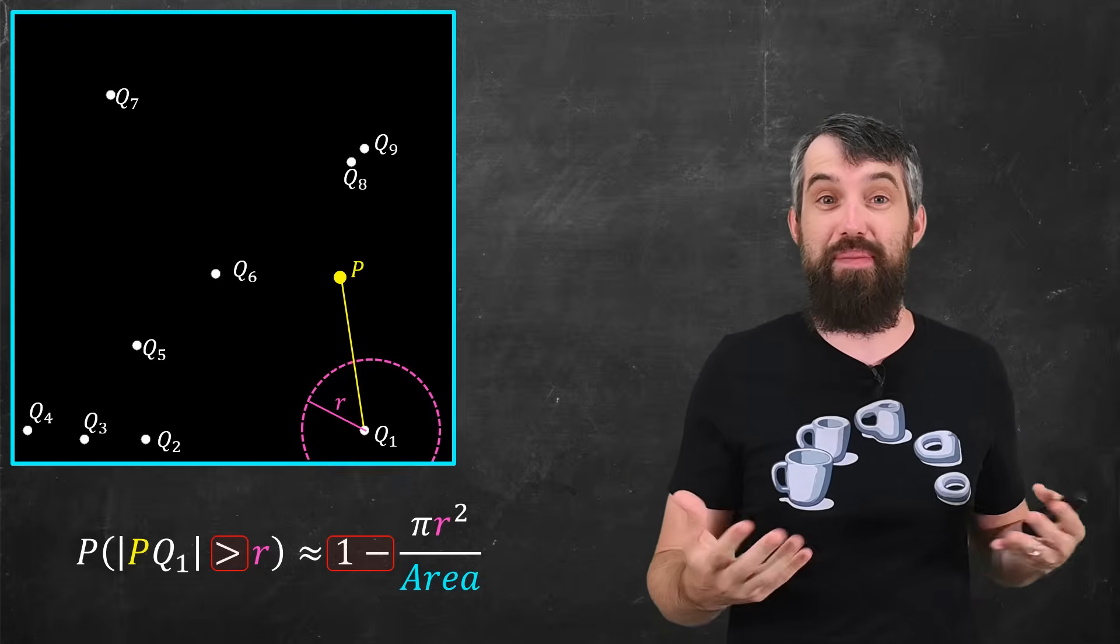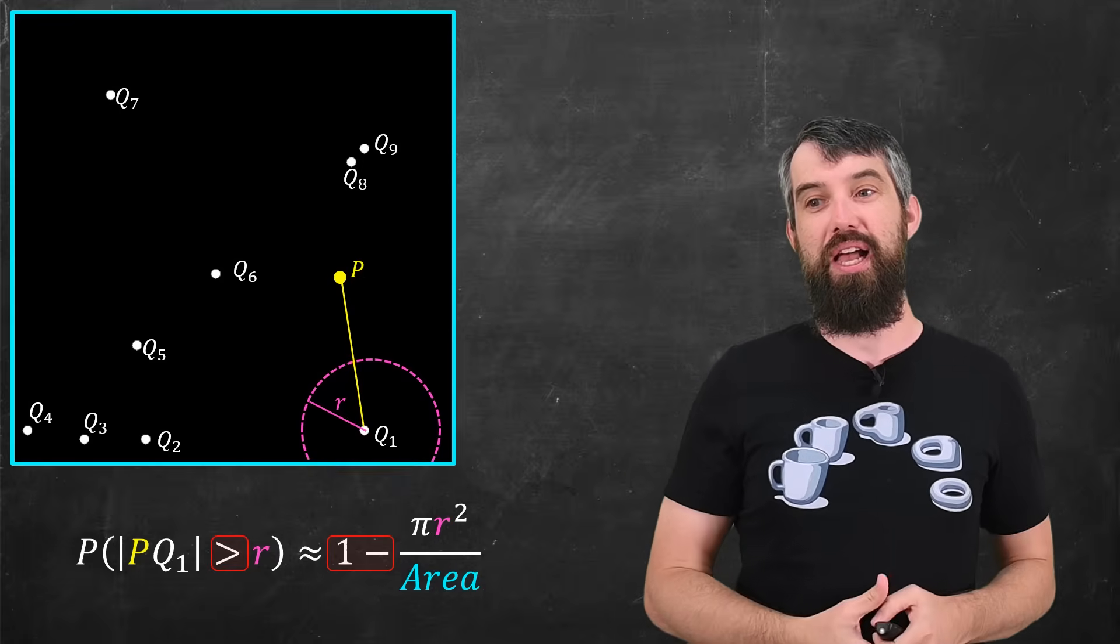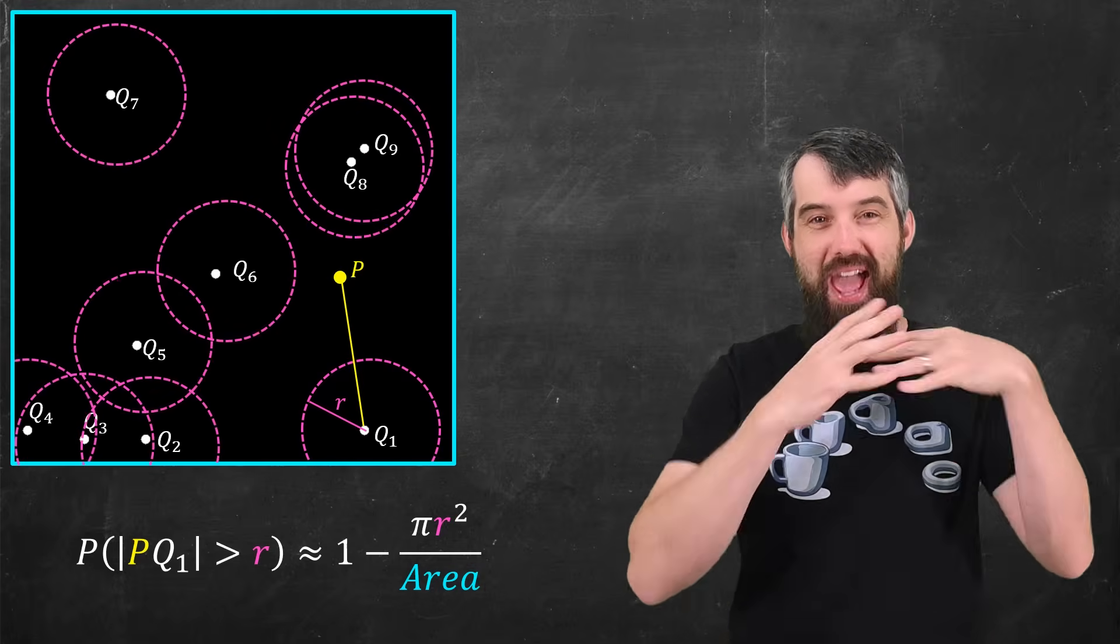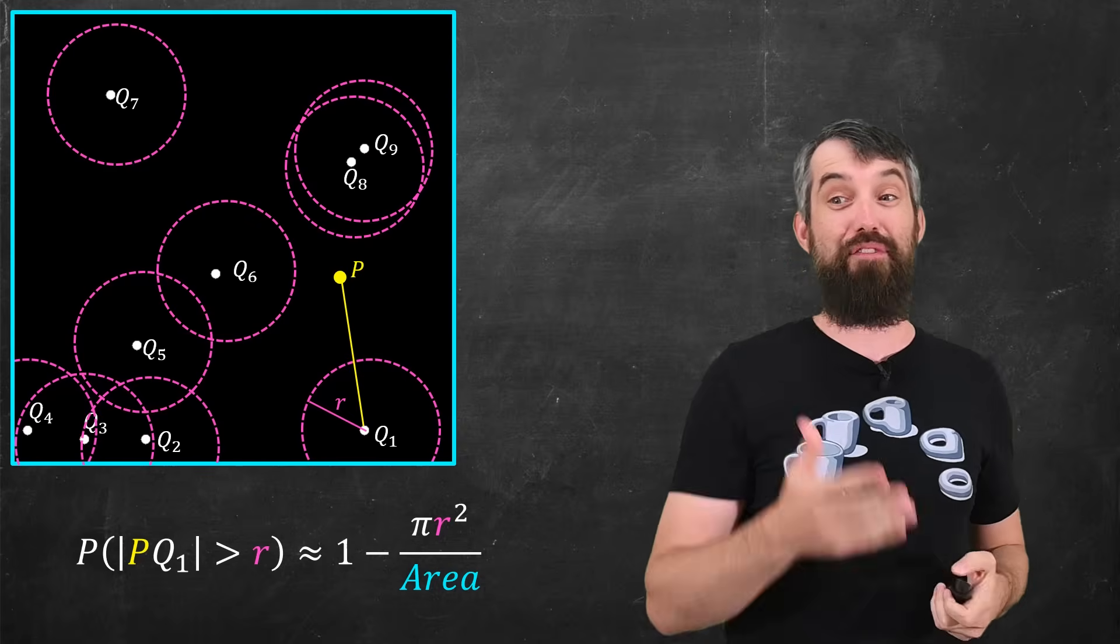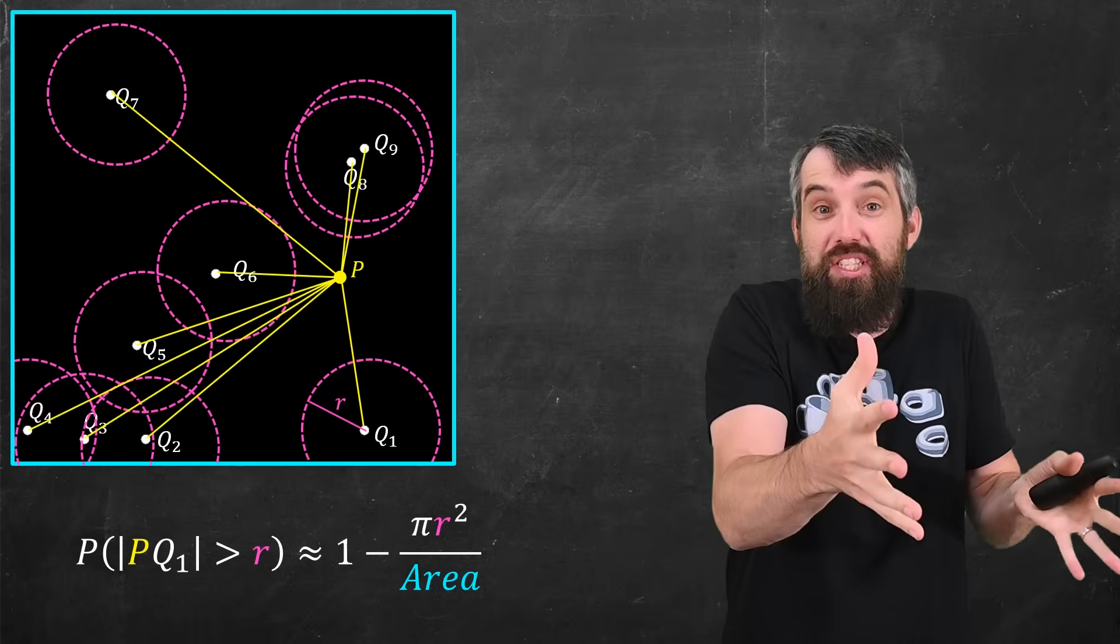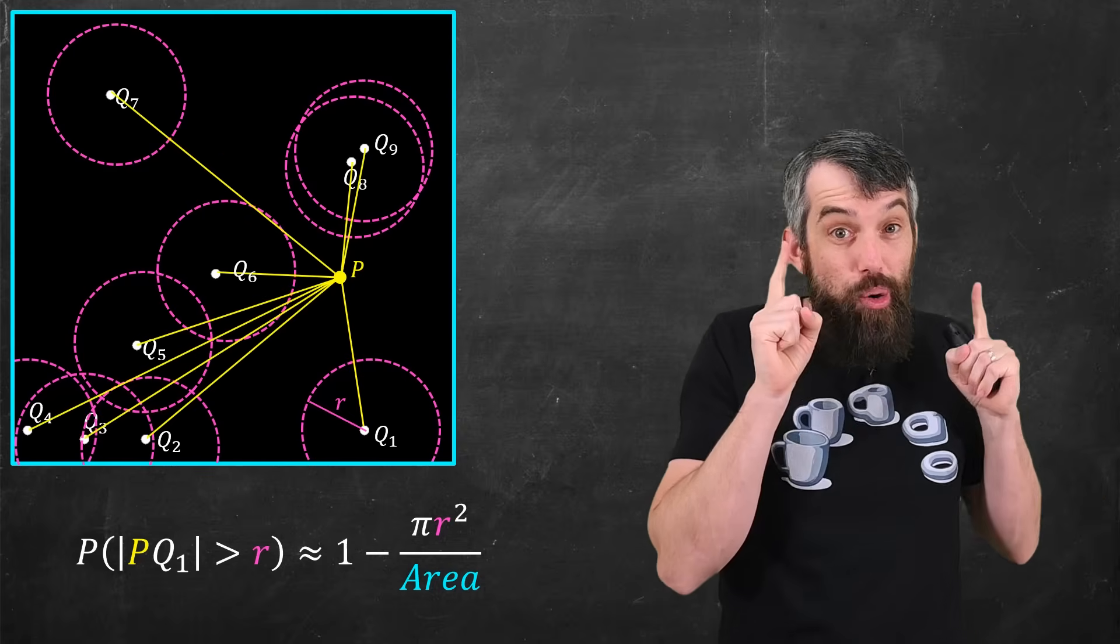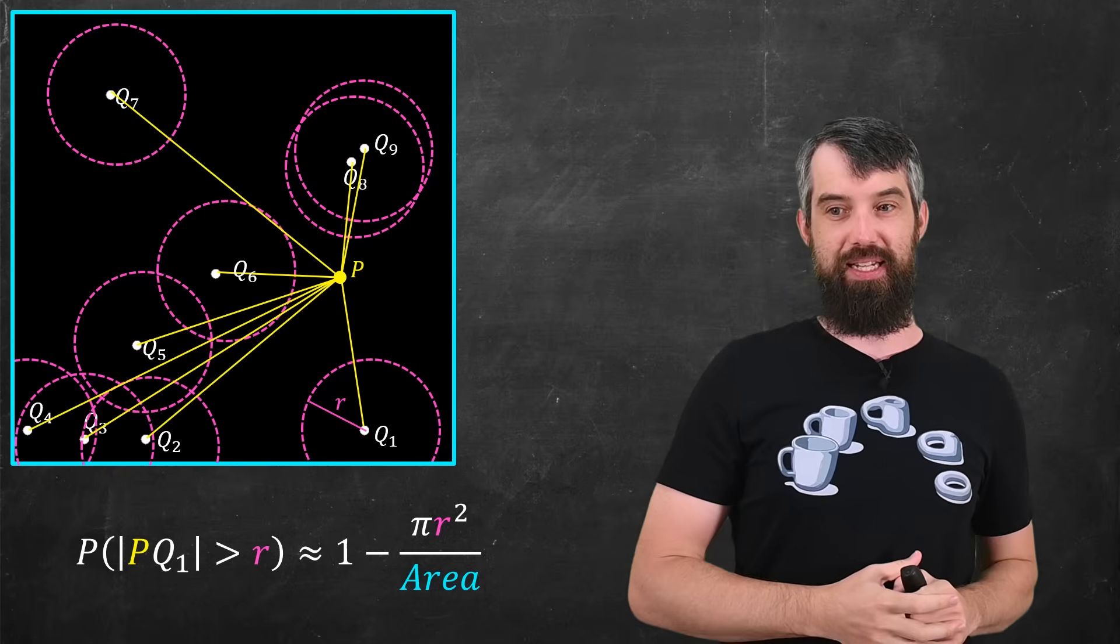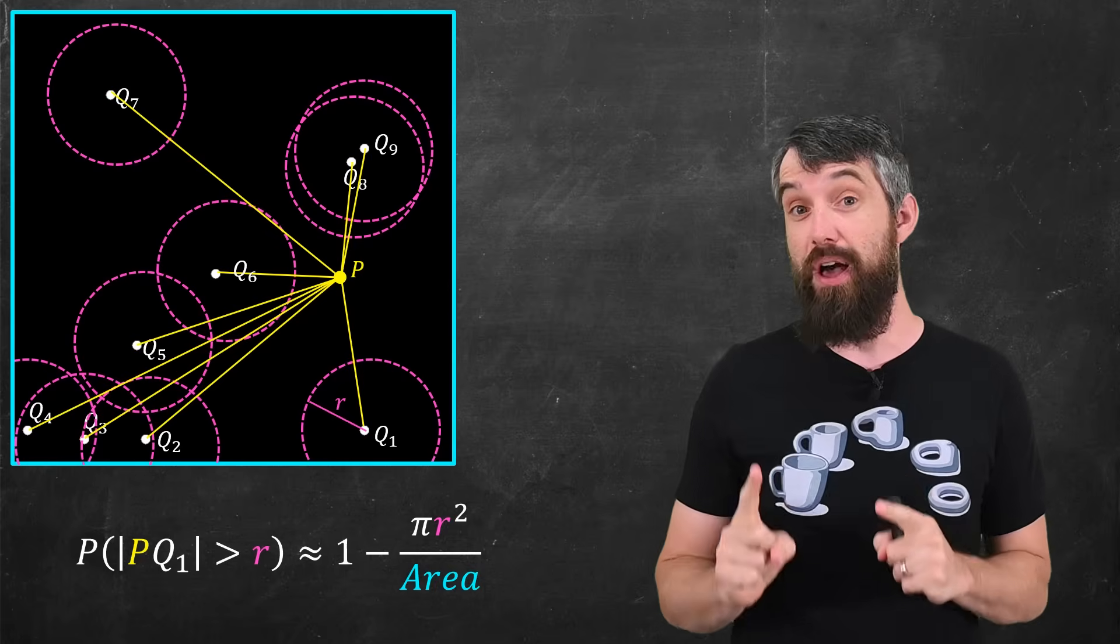But what if I asked the same thing for all of the different points? That is, let me imagine there's a similar circle of radius R around every single one of the points, and I'm trying to figure out the distance from P to every single one of those, and what I'm really interested in is the probability of the minimum distance being at least equal to the value of R.